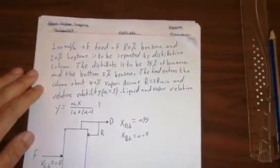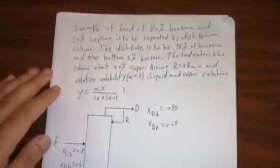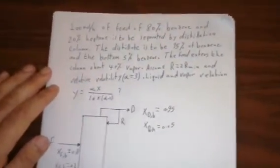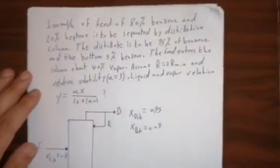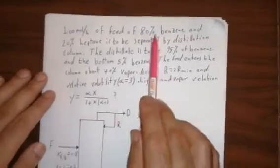Very good day, now we will continue talking about the McCabe-Thiele method and how we can calculate the minimum number of plates and maximum number of plates. We take this example: mole per hour of feed, 80% benzene and 20% heptane.